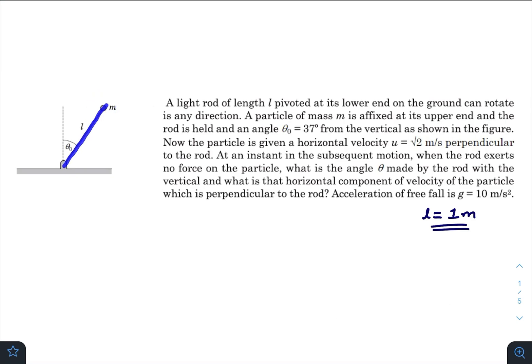The particle is thrown perpendicular to the rod and in the horizontal direction. That means if you draw here it should be a cross—the direction of velocity would be a cross. What is the angle θ at an instant in the subsequent motion when the rod exerts no force on the particle? What is the angle θ made by the rod with the vertical and what is that horizontal component of the velocity of the particle which is perpendicular to the rod?